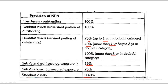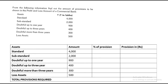To summarize the table: loss-making assets — 100%; doubtful debts overall — 100%; up to one year — 25%; above one year but up to three years — 40%; more than three years — 100%; substandard secured — 15%; unsecured — 25%; and standard assets, which are the normal ones in rotation — 0.40%.